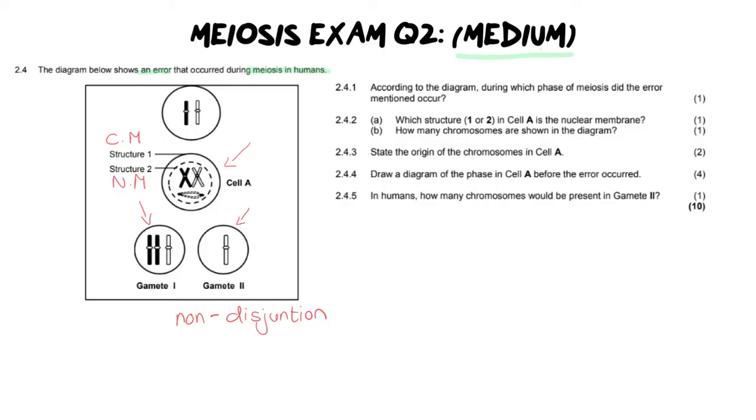So let's go over to the questions and see what they want from us. Number one says according to the diagram, during which phase of meiosis did the error mentioned occur. Now if we're looking at this, the only time that non-disjunction can occur—in other words chromosomes fail to separate—is going to be in anaphase. Now it can occur actually in anaphase 1 or 2. I always encourage my grade 12s to write anaphase 1 or 2. In other words, you must just not leave it as anaphase. Give us a 1 or a 2.